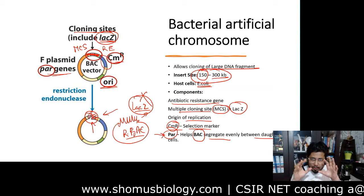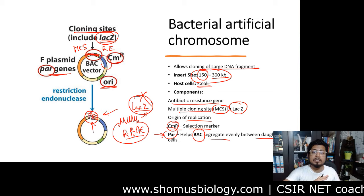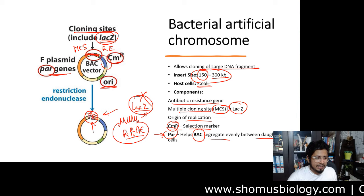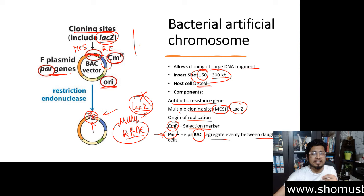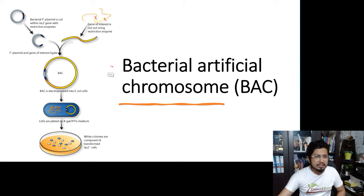We can easily distinguish bacterial colonies by whether they produce lacZ or not. If lacZ is being produced, the target DNA of interest has not been inserted — no recombinant DNA has been produced. But if recombinant DNA is produced, it destabilizes lacZ, and no lacZ product is made in those bacterial colonies. This is determined using a color-based screening known as blue-white screening.